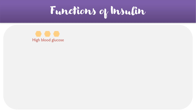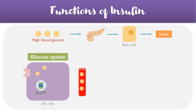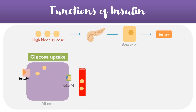When we have high levels of blood glucose, it triggers the pancreas, and more specifically the beta cells of the pancreas, to start secreting insulin. This insulin can act in two main ways to reduce blood glucose levels back to normal, the first being increasing glucose uptake. Insulin binds its receptor, and this triggers a transporter called GLUT4 to fuse with the cell surface membrane, thereby allowing glucose to enter the cell.